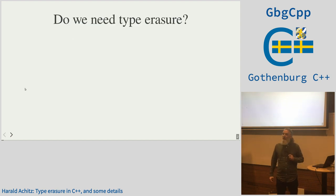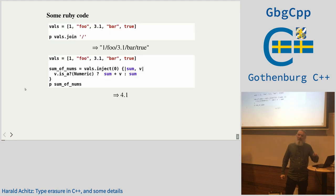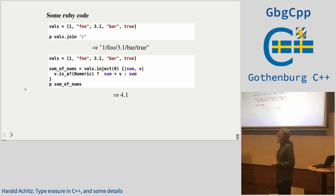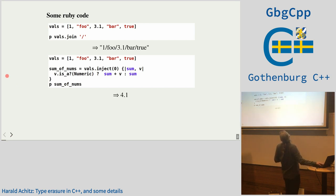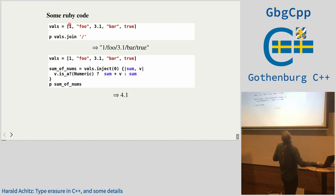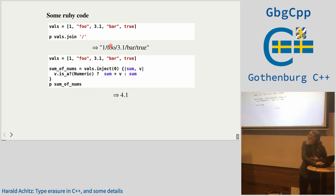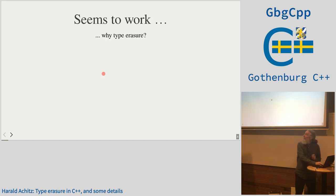But do we actually need type erasure? When I look at some Ruby code, obviously we don't need it — it just works. We can put in strings, numbers, integers, doubles. We can change them, print them out, and it will just work. And when we collect the numbers, it will also just work.